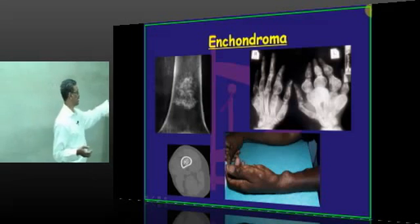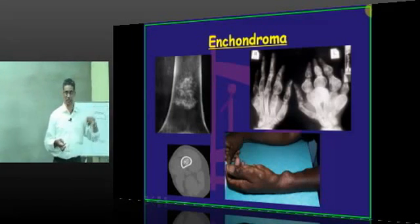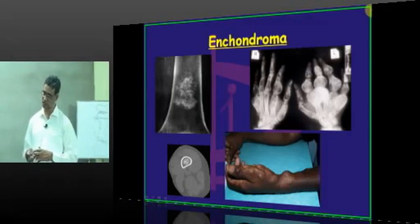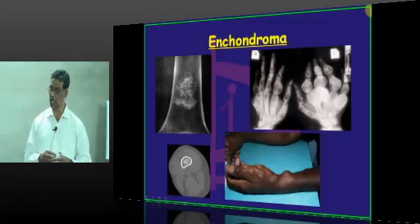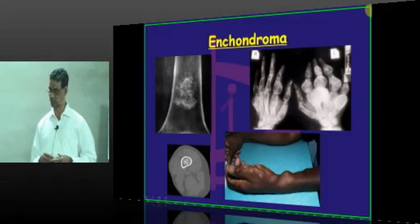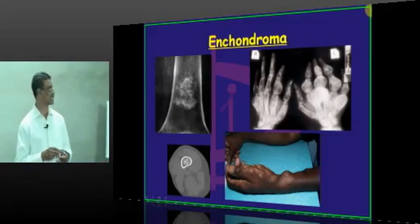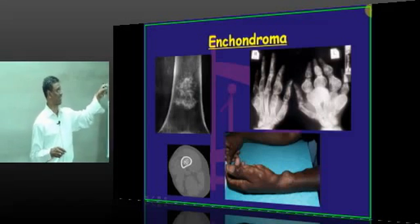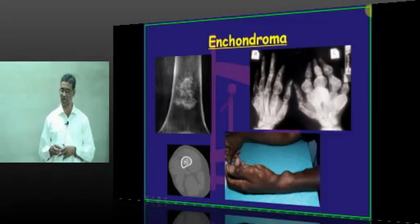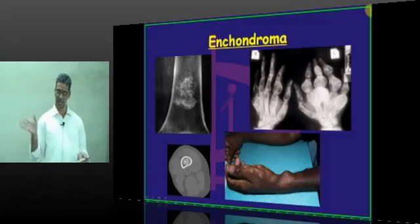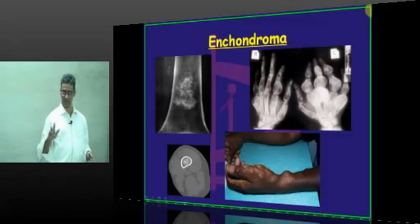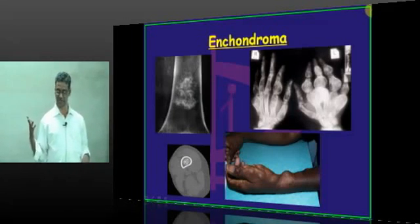If it is single, it may be in the long bone. If it is multiple, it is in the hands and feet bones. There are two associated diseases: one is Ollier's disease and the second is Maffucci's syndrome.